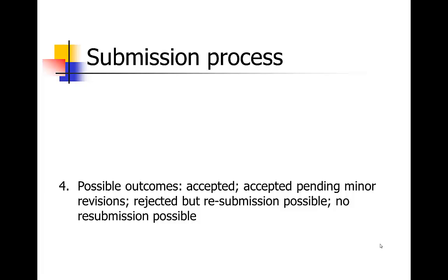Most papers that end up in the published literature have gone through this step — at least one round of revision and resubmission. Journal editors want you to go through a round of revision to make sure the paper has been thoroughly vetted and is as good as it can be. So that's really what you're aiming for when you submit an original research manuscript — that reject but resubmit category. It sounds negative, but it's actually a pretty positive category.